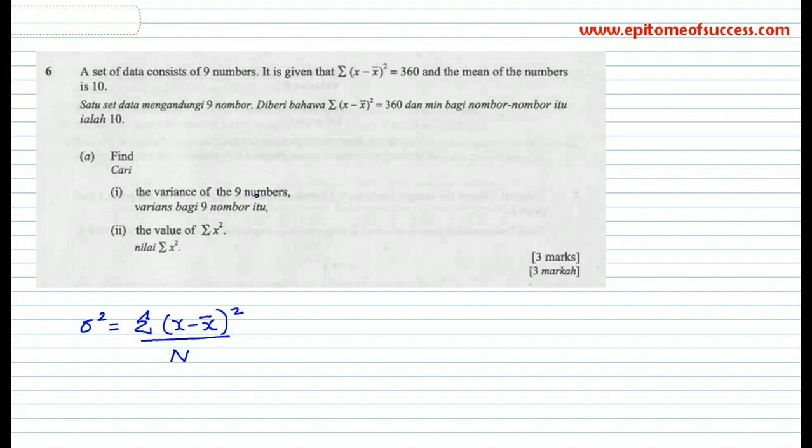They ask you to find the variance. You already have this. It's actually a very easy question, because they ask you to find the variance. This is given to you. It's 360, so just put it in, 360, and N would be the total number of data, which is 9. That gives you 40. The variance of these 9 numbers is actually 40. You do not have to make use of the mean right now.